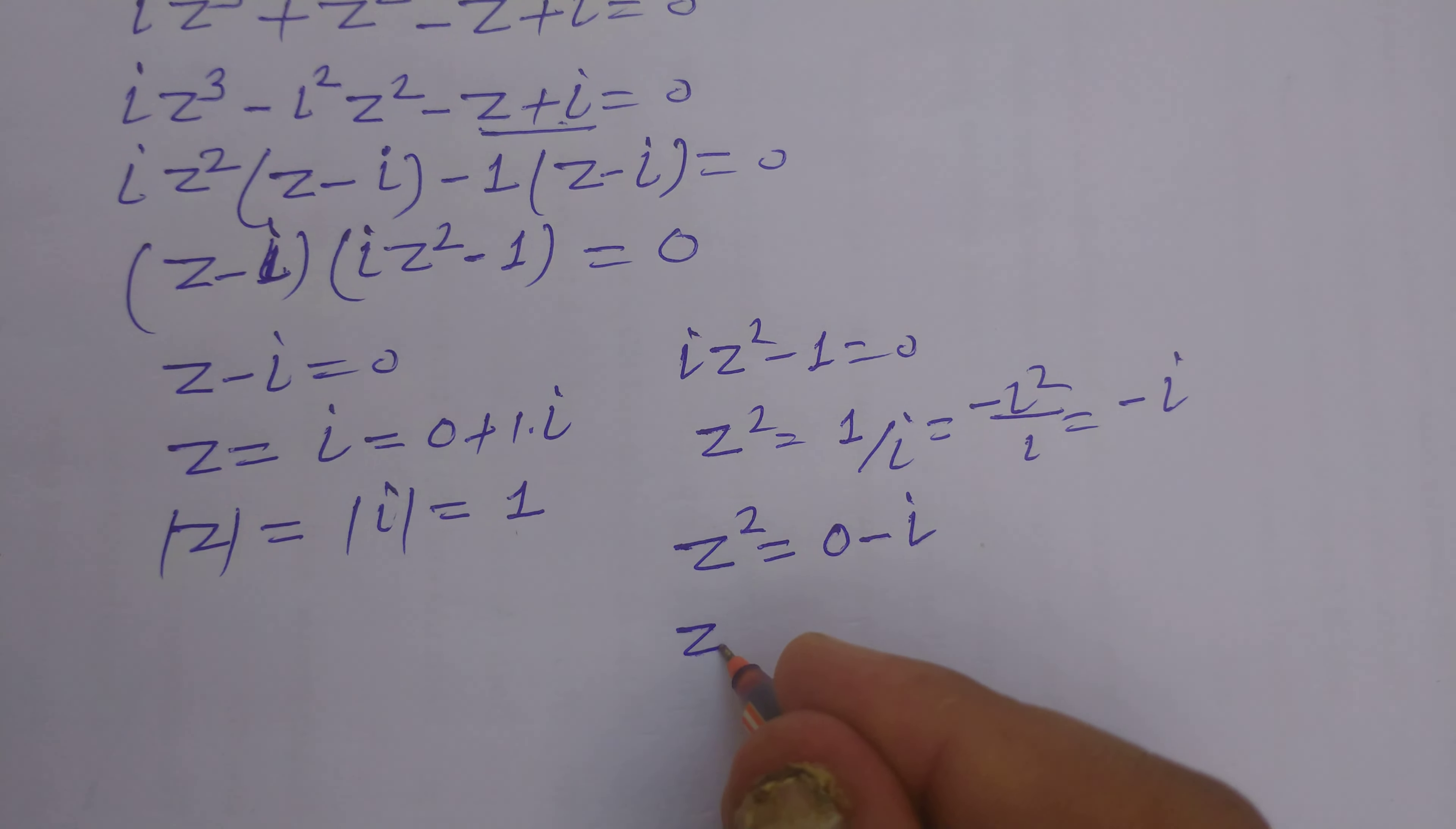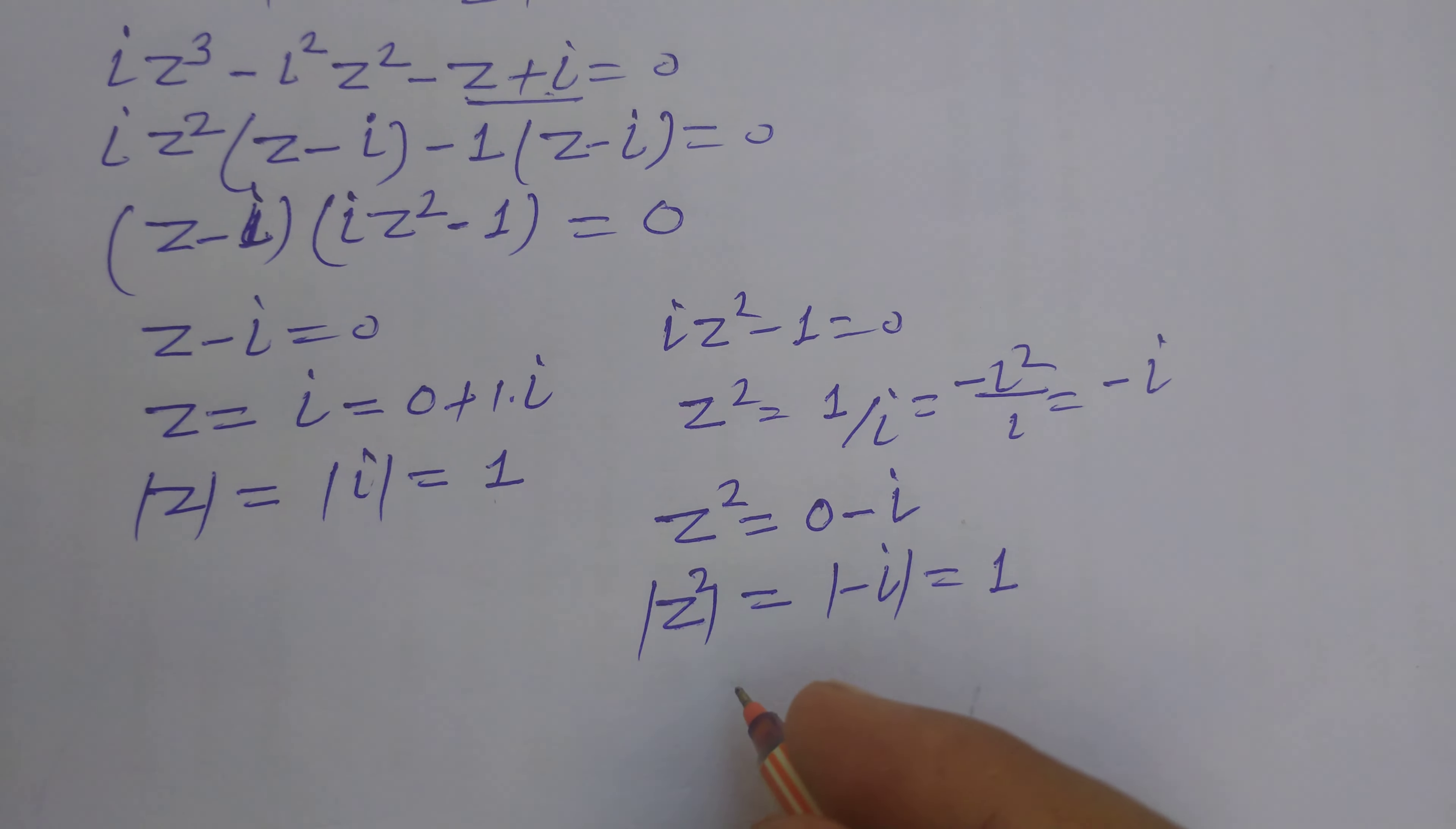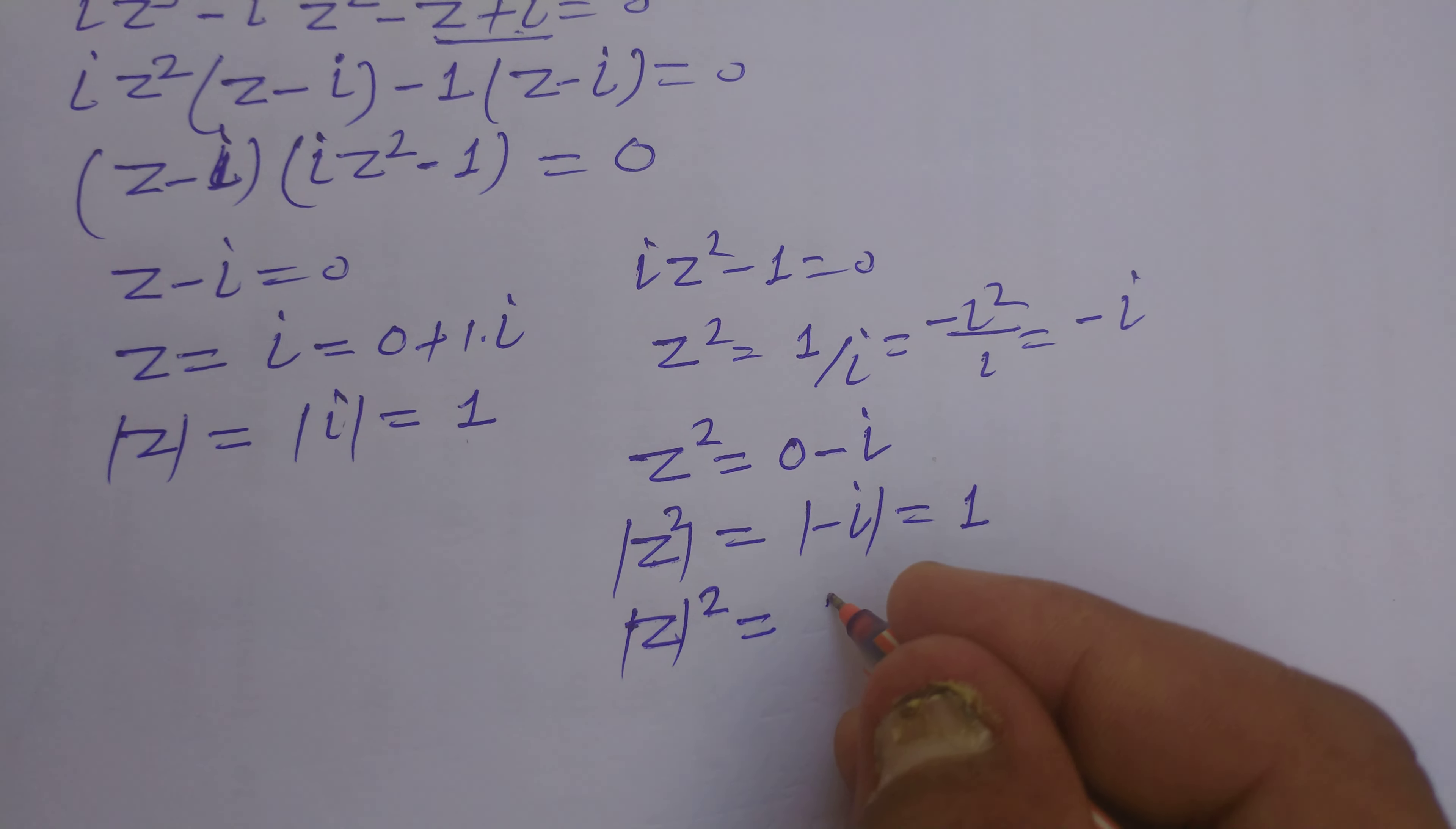So this will be z squared minus iota which is 1. And z squared equals modulus of z squared. Modulus of z squared equals whole square of modulus z squared equals 1.